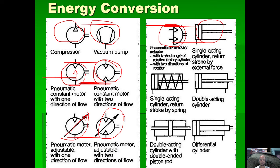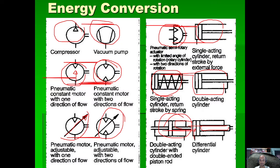We have a pneumatic semi-rotary actuator, a single-acting cylinder, a single-acting cylinder with spring return, a double-acting cylinder, a double-acting cylinder with double-ended piston rod. Since it has two ends, if you put pressure in here there is also pressure inside that counters it, so the piston moves slowly — this is a differential cylinder.